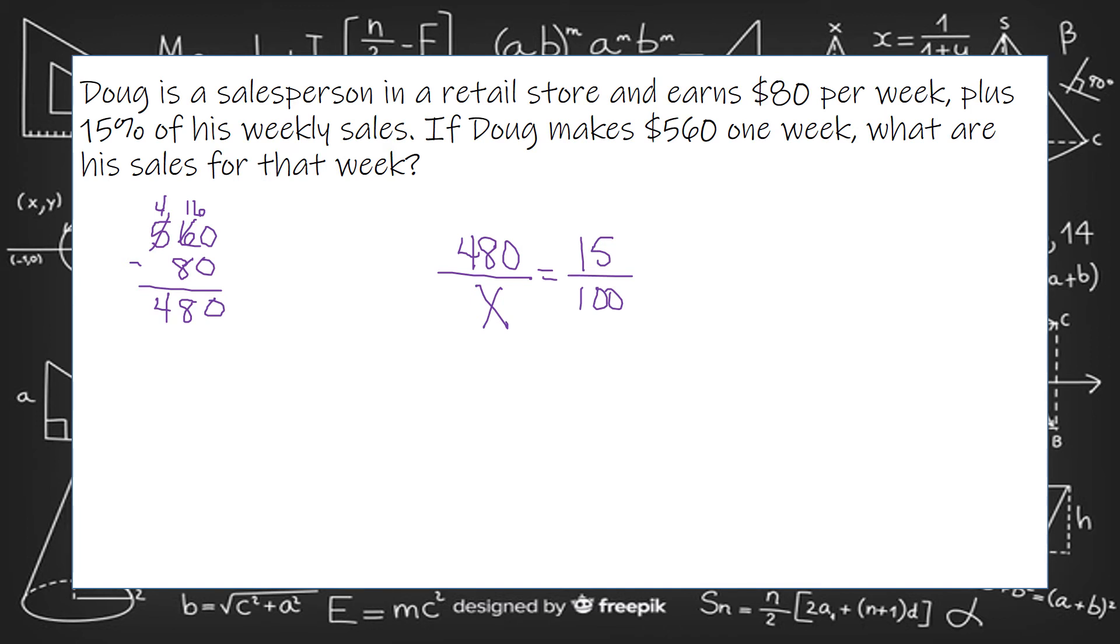So we're going to cross multiply. 15 times X is 15X. 480 times 100 is 48,000. So 15 is being multiplied by X.